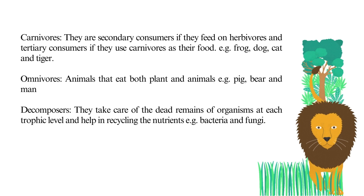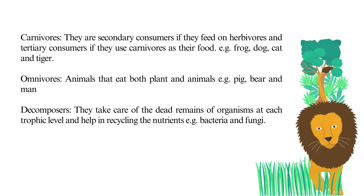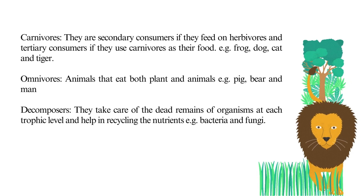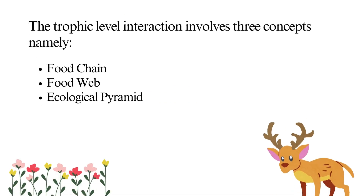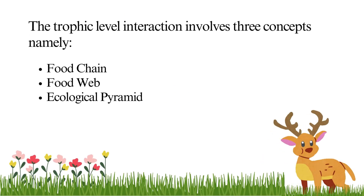Decomposers: they take care of the dead remains of organisms at each trophic level and help in recycling the nutrients — for example, bacteria and fungi. Energy flows through the trophic levels from producers to subsequent trophic levels. This energy always flows from lower to higher trophic level; it never flows in the reverse direction, that is from carnivores to herbivores to producers. There is a loss of some energy in the form of unusable heat at each trophic level, so energy level decreases from the first trophic level upwards.